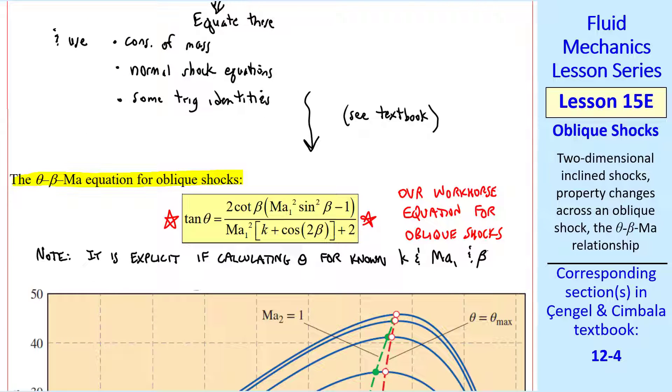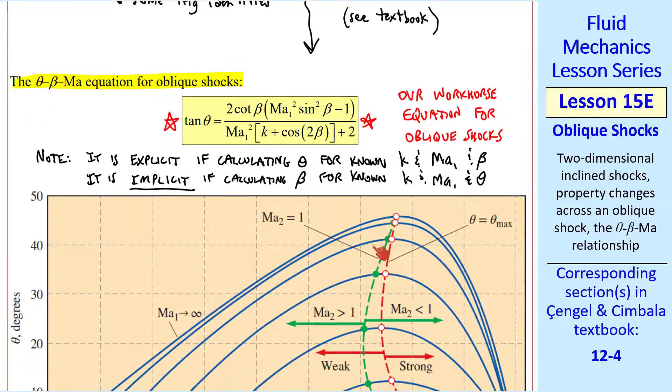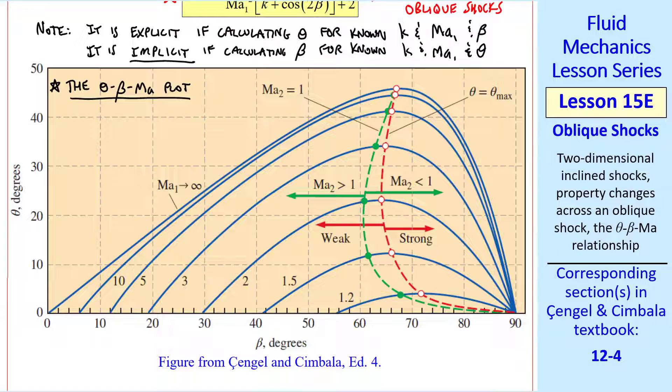Note that it's explicit if calculating theta for known K, MA1, and beta. But it is implicit if calculating beta for known K, Mach number, and theta. Since beta appears in this equation several times, you can't solve for beta explicitly. Let's plot this equation. We'll call it the theta, beta, Mach number plot. We plot beta on the horizontal axis, theta on the vertical axis, and each of these curves represents a different value of Mach number 1. They're all supersonic, of course, and we plot from 1.2 up to infinity.